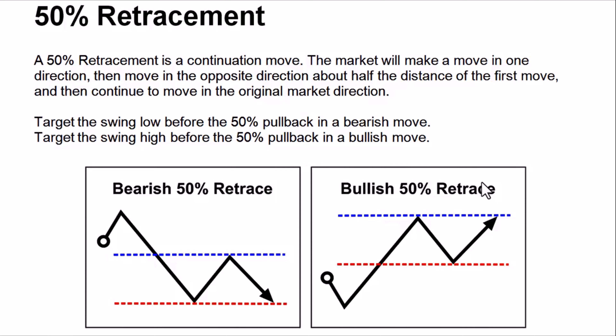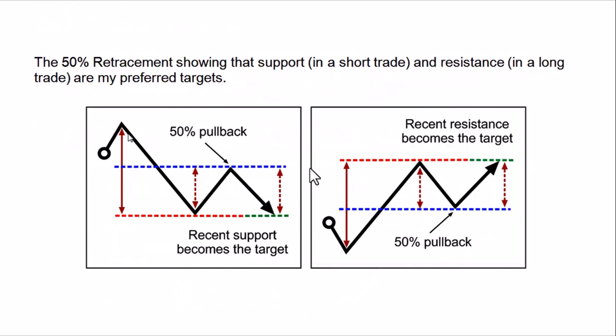Let's talk about targets — the traditional take profit and stop loss with this move. A 50% retracement using Fibonacci shows that support in a short trade or resistance in a long trade are the more preferred targets. The market came down from here, hit a support zone, pulled back and formed a resistance zone, covering 50% of that long move. Now how do you target and how do you enter this trade?